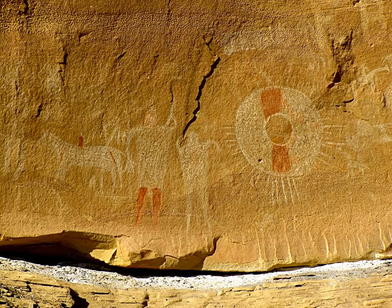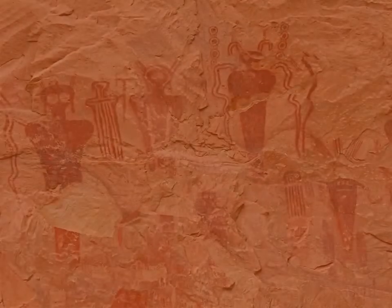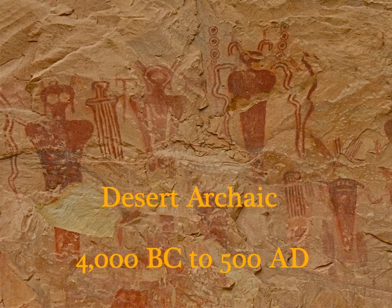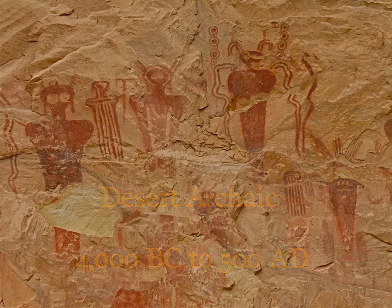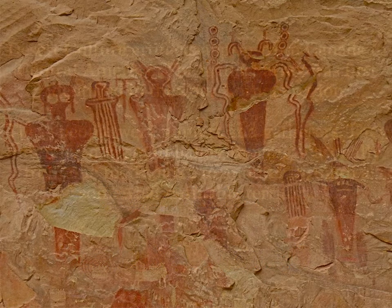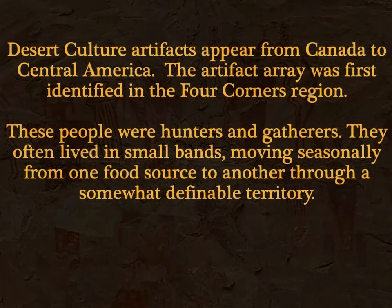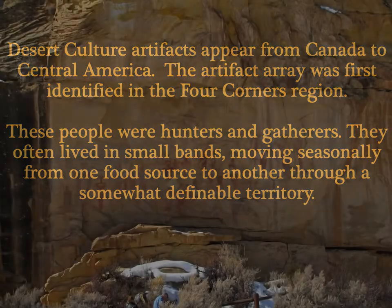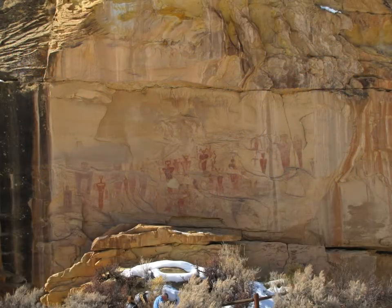We'll start with the desert archaic culture — maybe as far back as 6000 BC, maybe 0 AD, but it's imprecise dating for this group. Desert culture artifacts appeared from Canada to Central America. They were first identified in the Four Corners region. These people were hunters and gatherers, often living in small bands, moving seasonally from one source to another across a defined territory.